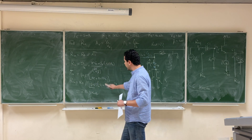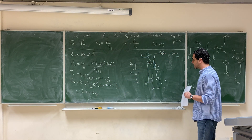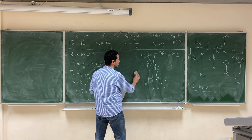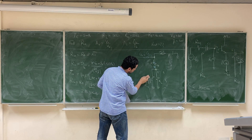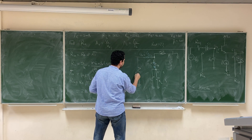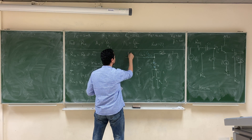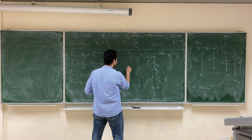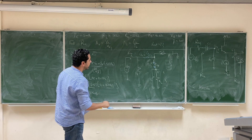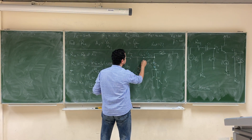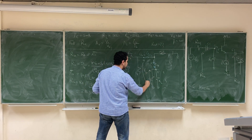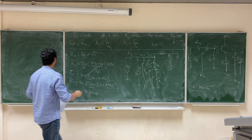Once we've calculated Rin, let's go back to our original circuit. We have RB, and our V-signal. Next, we need to calculate the voltage gain Vout over Vbase. Vbase is the voltage at the base node, and Vout is the voltage at the output node. So we need to calculate the voltage gain Vout over Vbase.